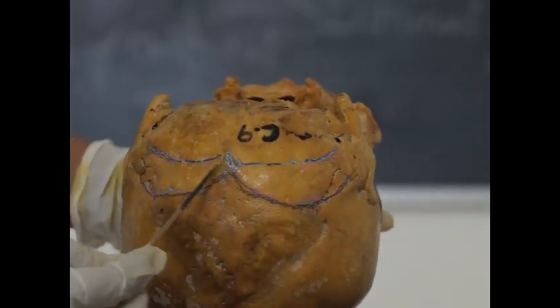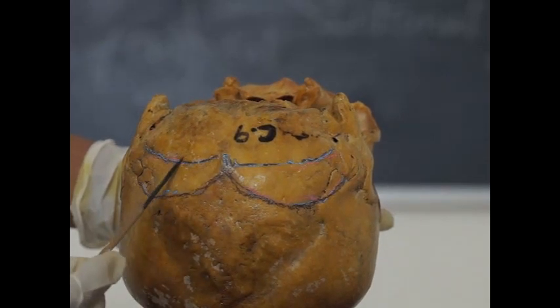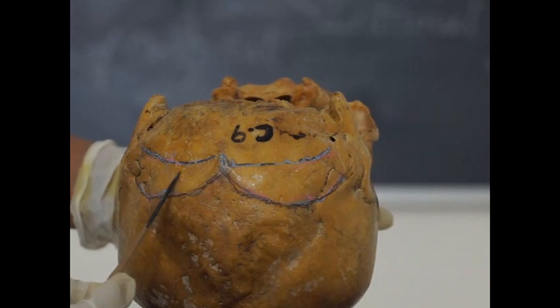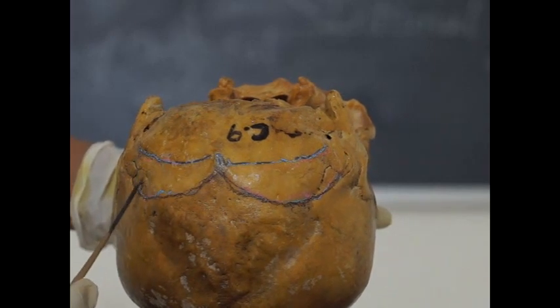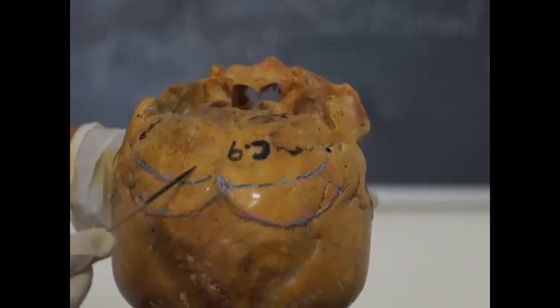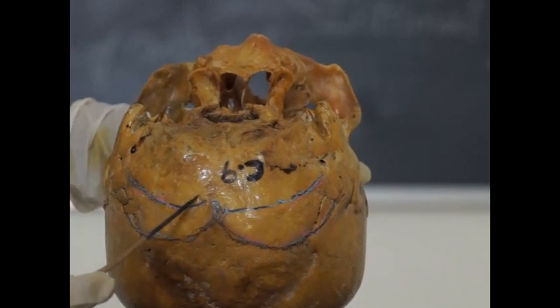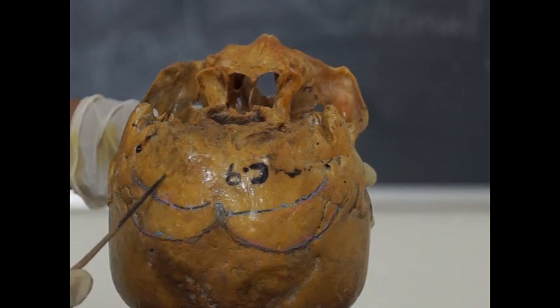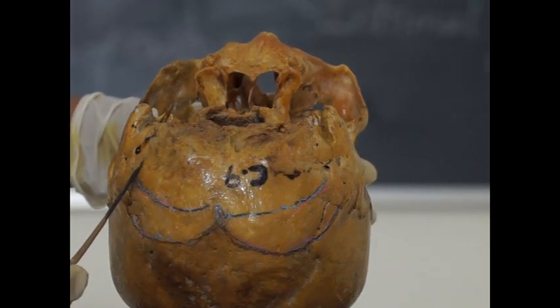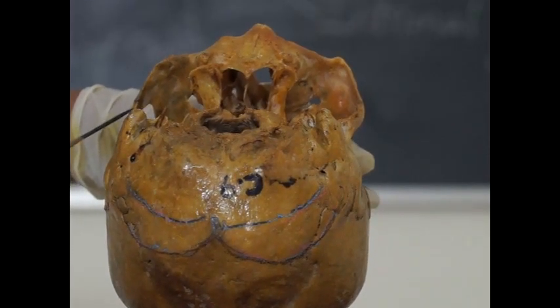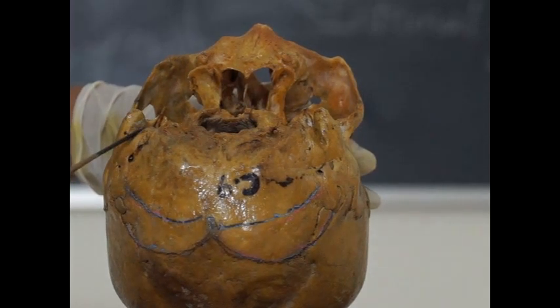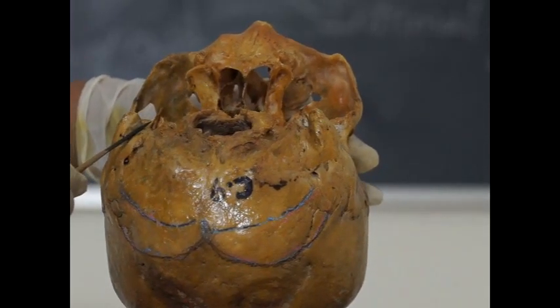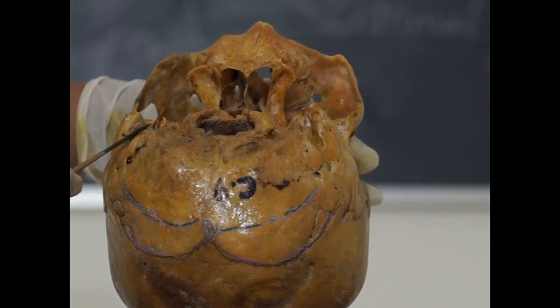And structures attached between the superior and inferior nuchal line medially gives attachment to semispinalis capitis and laterally superior oblique muscle. Below the inferior nuchal line medially the muscle attached is rectus capitis posterior minor and laterally rectus capitis posterior major muscle. And this is the mastoid process medially the mastoid notch the muscle attached to the mastoid notch is posterior belly of digastric.